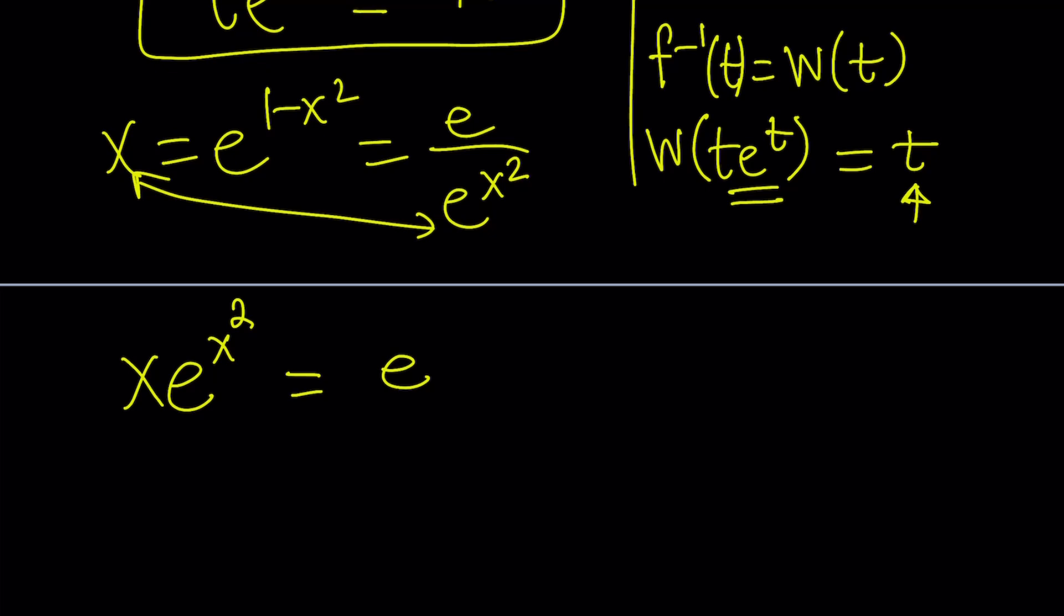If we had x times e to the x that would be really cool because I could just apply W to it and that would give me x. Lambert W or product log is another name for it. The product log of xe^x would be x in this case, but I don't have that. I have x times e to the x squared.